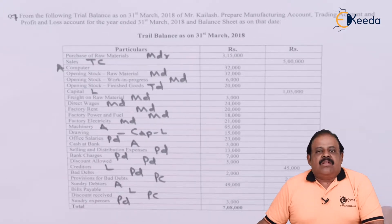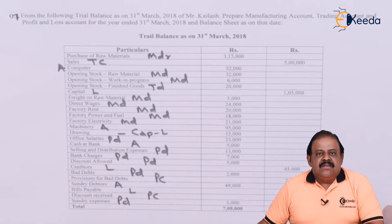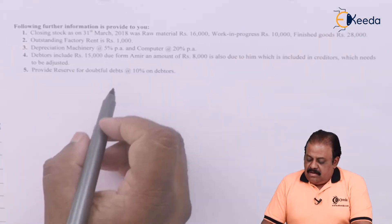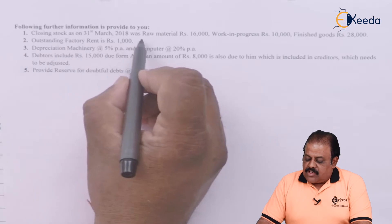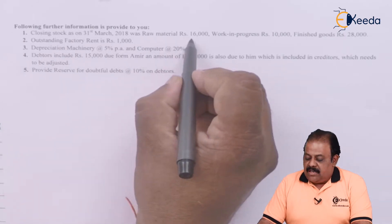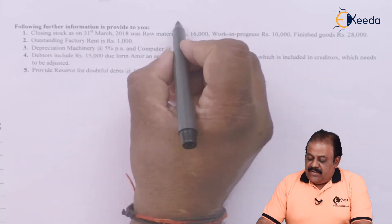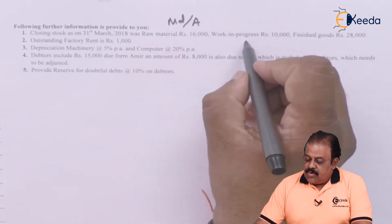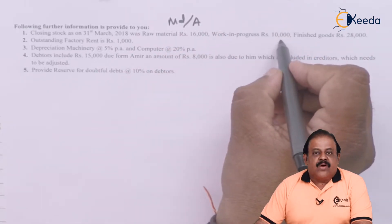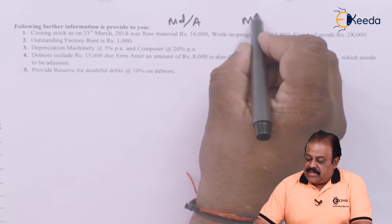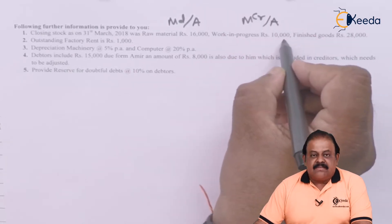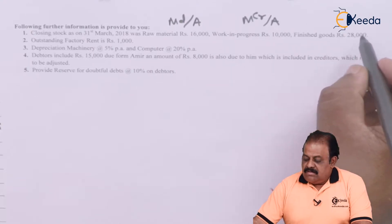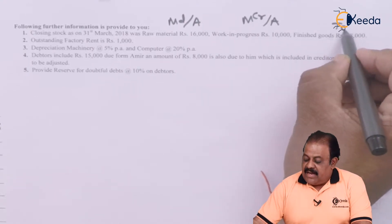We have discussed all the items of trial balance. Let us discuss adjustments. First adjustment is closing stock — it is simple. Closing stock as on 31st March 2018: raw material 16,000 — one effect manufacturing account debit, second effect asset. Closing stock of work in progress 10,000 — manufacturing account credit, second effect asset. Closing stock of finished goods — trading credit, second effect asset.